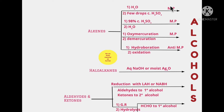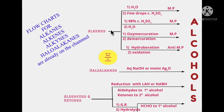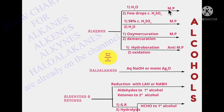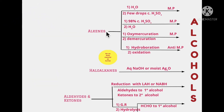We can convert alkenes to alcohols by hydration in the presence of a few drops of concentrated H2SO4, which gives the Markonikov product (M.P.). When you add an unsymmetrical alkene to an unsymmetrical reagent, the positive part of the adding reagent goes to the carbon bearing more hydrogen atoms. Reacting with concentrated H2SO4 or oxymercuration followed by demercuration gives a Markonikov product. Whereas if you carry out hydroboration oxidation, you get an anti-Markonikov product.